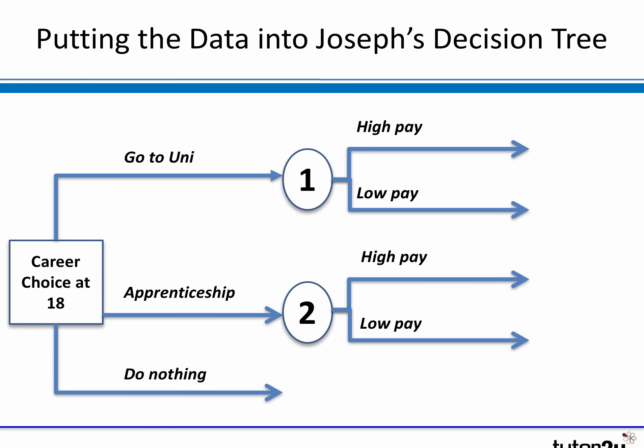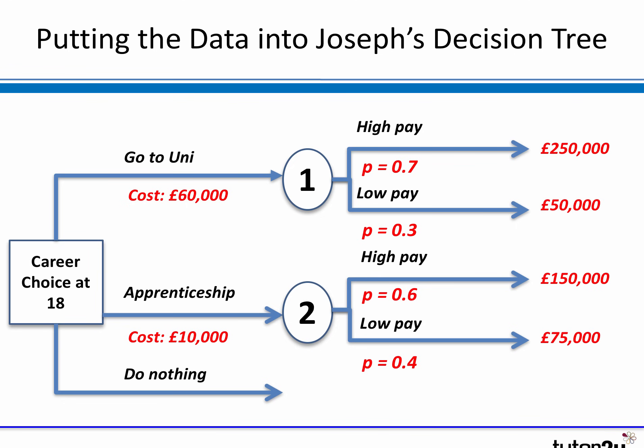There is our classic decision tree. Two choices: go to uni, take the apprenticeship, or do nothing — probably not an option. We know there are two outcomes for each option: high and low pay. The cost is £60,000 to go to uni and £10,000 for the apprenticeship. The probabilities have been added in — notice that for each choice the two probabilities equal one: 0.7 plus 0.3 equals one, and 0.6 plus 0.4 equals one. And we've been given the financial results of those four possible outcomes.